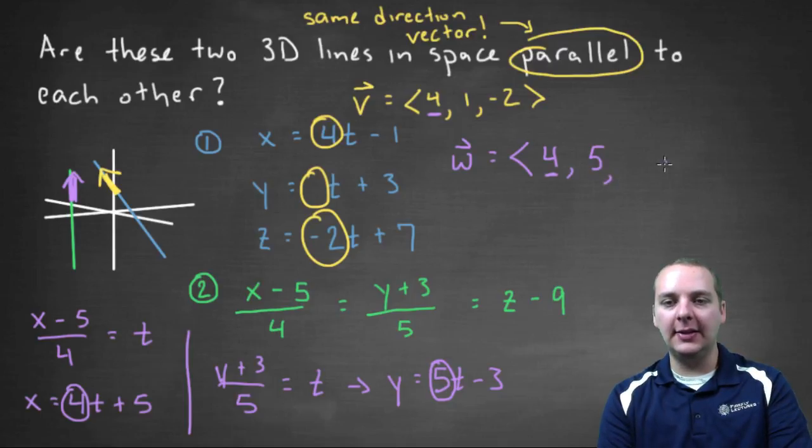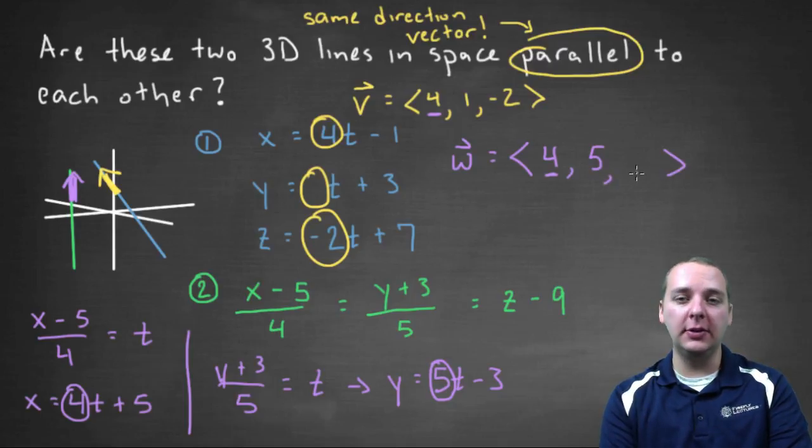And I can tell, even though I have a third component still to do, there's no reason to really even worry about the last component. Why? Because I can already tell right now these guys are not going to be scalar multiples of each other.